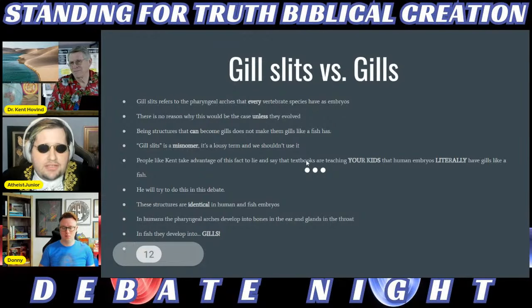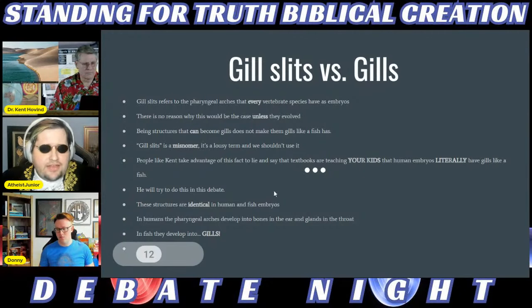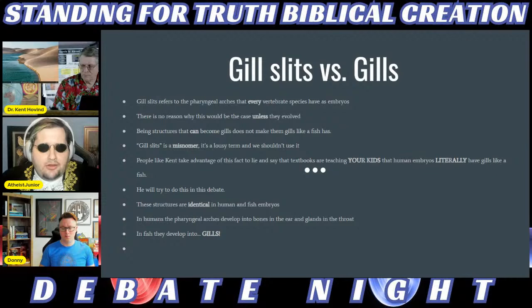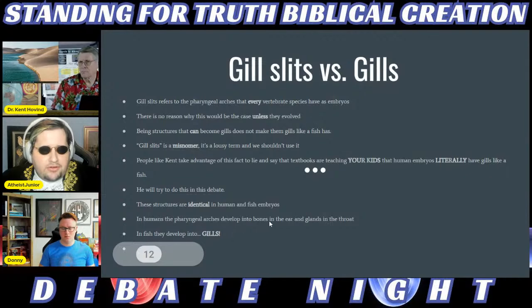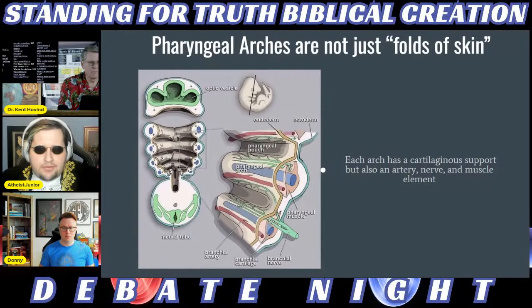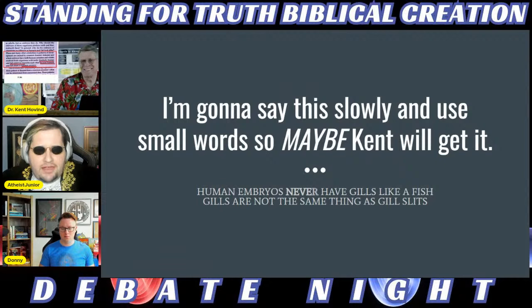The structures are identical in human and fish embryos in their early stages but turn into different structures in the adult form. In humans they're part of the ear and throat; in fish they become gills. Pharyngeal arches are not just folds of skin — each arch has a cartilaginous support, an artery, nerve, and muscle elements. Human embryos never have gills like a fish. Gills are not the same thing as gill slits.